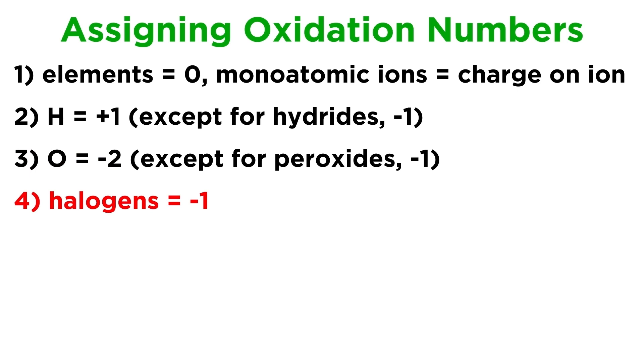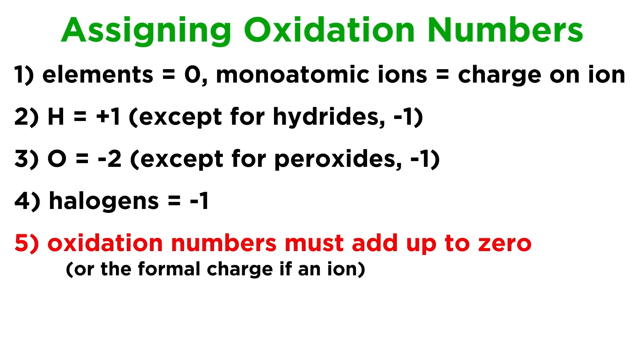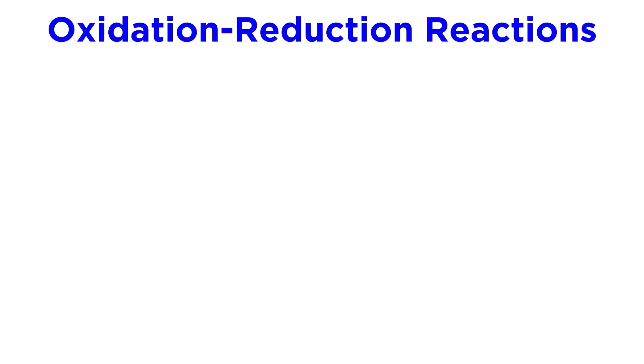4. Halogens are typically minus one. And 5. The sum of the oxidation numbers in a neutral molecule must add up to zero, or, for a polyatomic ion, they must add up to the formal charge on the ion.